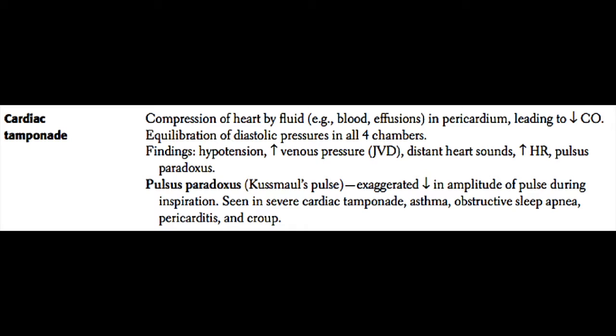Next we'll discuss cardiac tamponade. Cardiac tamponade is caused by compression of the heart by fluid located in the pericardial space. That fluid can be composed of blood or some other type of effusion, and as the heart is compressed by that pericardial fluid, it can lead to decreased cardiac output. These patients often present with hypotension, elevated neck veins, and shortness of breath.